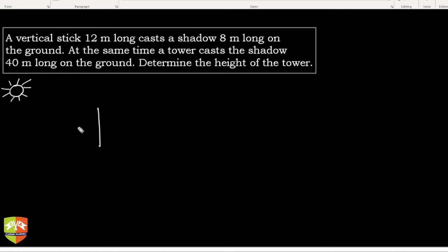stick, and this is 12 meters long. Let's say the shadow is 8 meters long. So let me name these. Let's say the stick is AB and the shadow is BC. Given AB